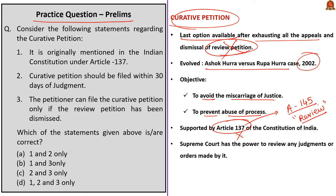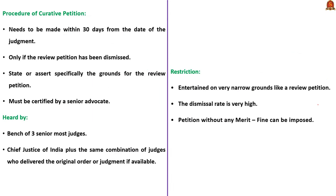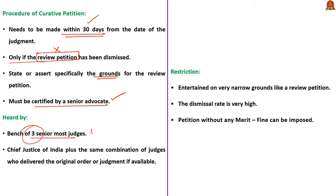Now let us look into the procedure of Curative Petition. A Curative Petition needs to be made within 30 days from the date of judgment passed. A petitioner can file a Curative Petition only if the Review Petition has been dismissed. The petitioner must also specifically state the grounds for the Review Petition and that it was dismissed by circulation, which must be certified by a Senior Advocate. A Curative Petition is heard by a bench of three Senior Most Judges including the Chief Justice of India, plus the same combination of judges who delivered the original order. The Curative Petition is entertained on very narrow grounds, and the dismissal rate is also very high. If the petition is filed without any merit, the Court may impose a fine on the petitioner.